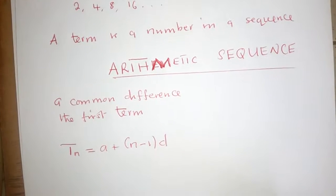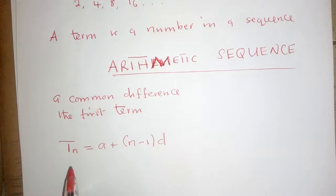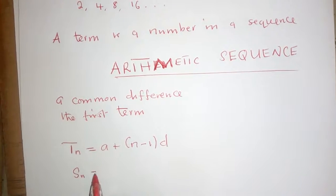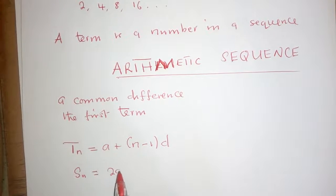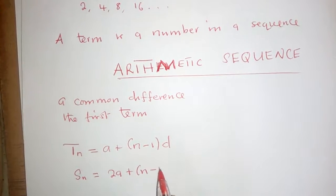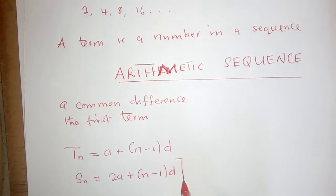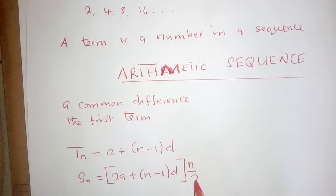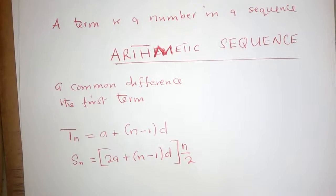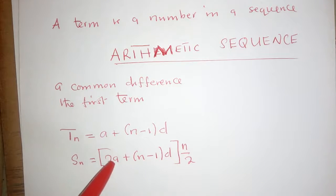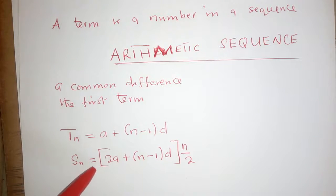You need to memorize these formulas. The formula for the nth term must be in your head. If they ask you to find the sum, you use the sum formula. These two formulas are very useful when it comes to arithmetic progression, and I'll explain them as we work through the examples.